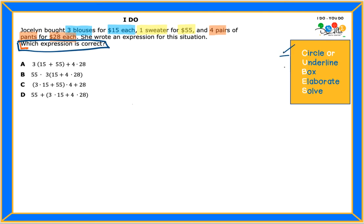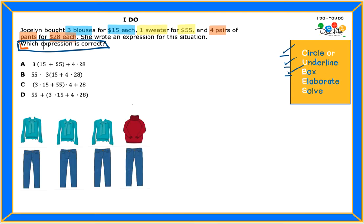We did underline, we boxed the question, and now we're going to elaborate. Since I have to match the situation with all the different expressions in the choices, I'm going to make a picture of this situation to see what's going on. With this picture,